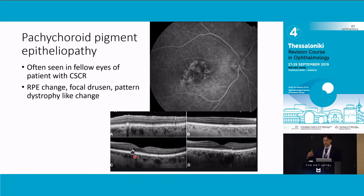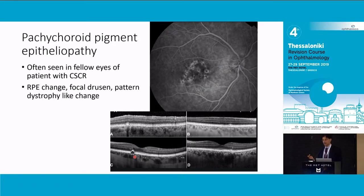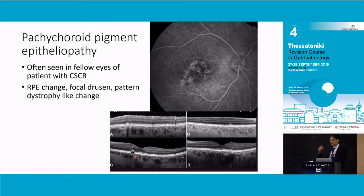The hypothesis from Bailey is that this is a pigment epitheliopathy primarily derived from having a thick choroid. The counter-argument is: how do you know they've not had CSR that's just resolved? Because it resolves in 80% of cases and could be asymptomatic because it's extrafoveal. So I'm not totally sure if this is a separate entity or just the after-effect of having CSR.